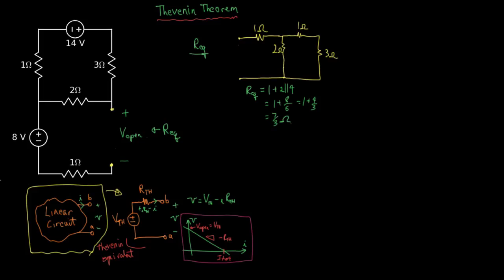That equivalent resistance is, in fact, the Thevenin resistance. Now let's solve for the open circuit voltage. When the circuit is open circuit, that current is zero,